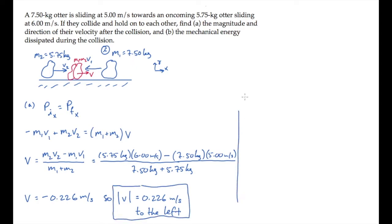Part B asks us to find the mechanical energy that's dissipated or lost during the collision. That change in energy is the change in kinetic energy, because there's no change in potential during the collision.